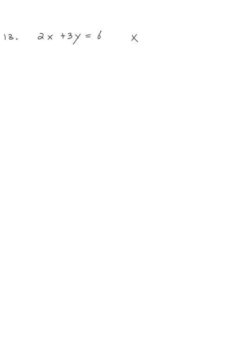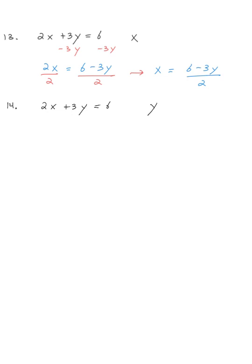Literal equations. For 2x plus 3y equals 6, we're solving for x. I'll subtract 3y from both sides: 2x equals 6 minus 3y. Dividing both sides by 2, x equals 6 minus 3y over 2. Now solving for y: I need to get rid of the 2x, so 3y equals 6 minus 2x. Dividing both sides by 3, y equals 6 minus 2x all over 3.